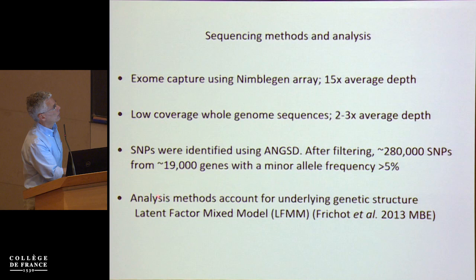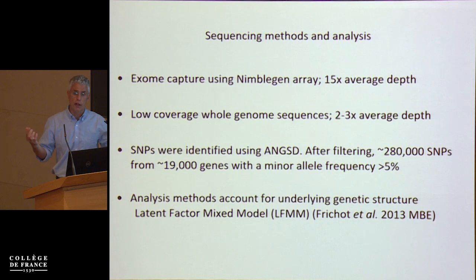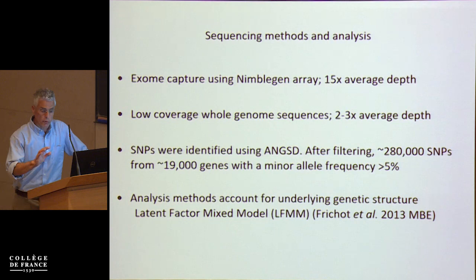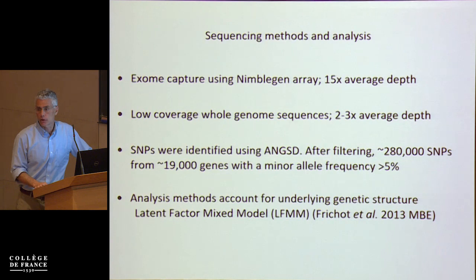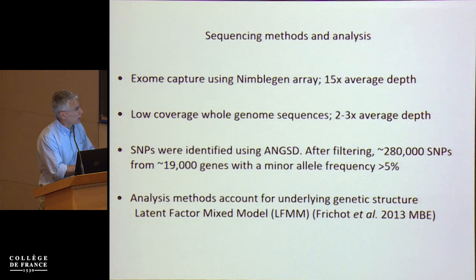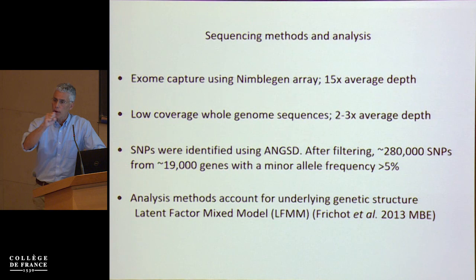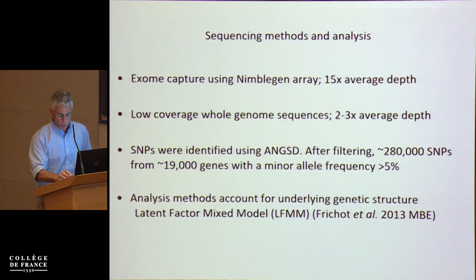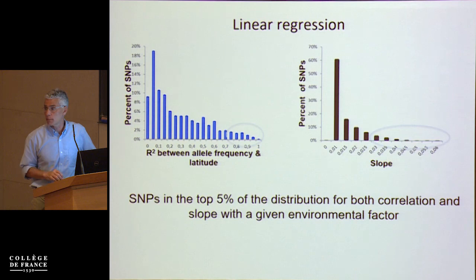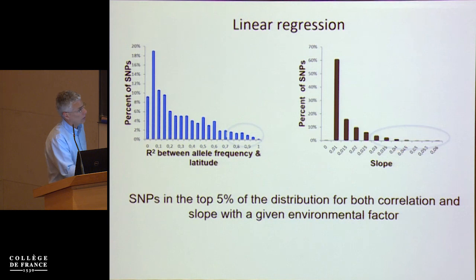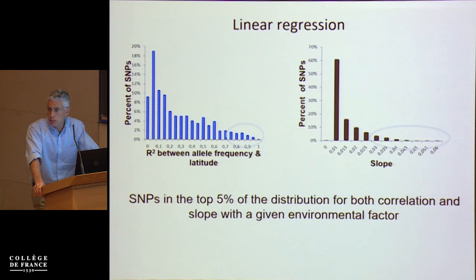We've done exome capture and low-coverage whole genome sequencing. The first thing we did was scans for selection — asking in an agnostic way what genes show signals of selection. We used a latent factor mixed model that accounts for the correlated history of populations to find allele frequencies that co-vary with some aspect of the environment after taking population structure into account. It turns out there's no isolation by distance along the eastern coast of North America — nearby populations are not more closely related to one another. We also simply looked for genes showing clinal patterns of variation — correlations with latitude — and those genes largely overlap with those from the latent factor mixed model.